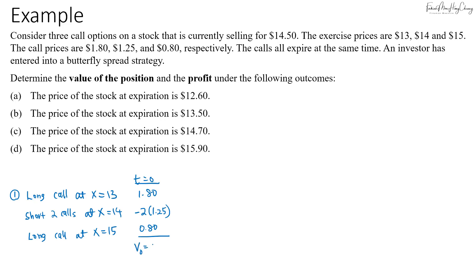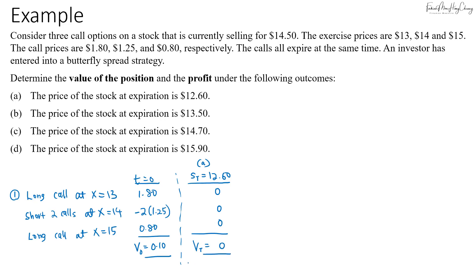This is a low-cost strategy. In scenario A, when the spot price is $12.60, all options are out of the money and cannot be exercised. The value at expiration is zero. The gain is therefore zero minus the $0.10 initial premium, resulting in a loss of $0.10.